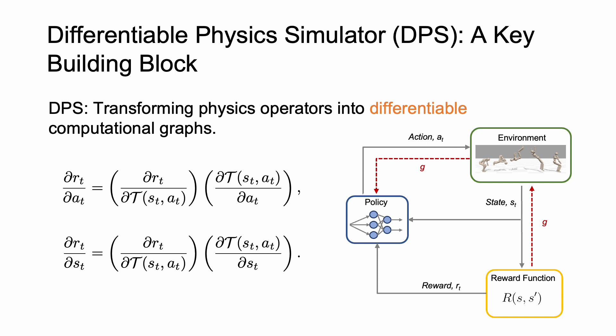DPS is a key building block that transforms physics operators into differentiable computational graphs, allowing for direct gradient propagation through environment dynamics.